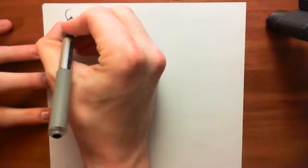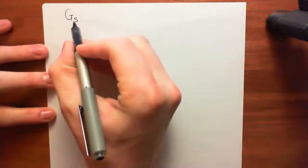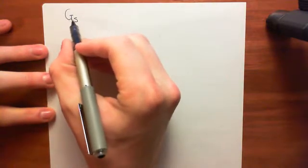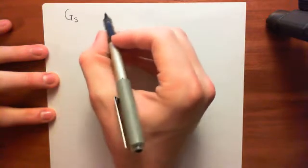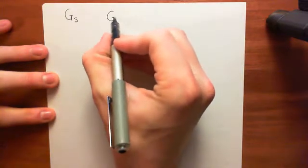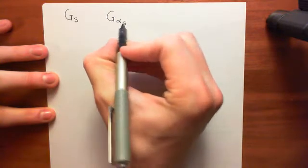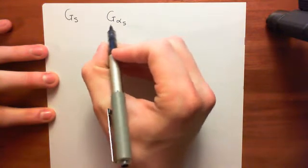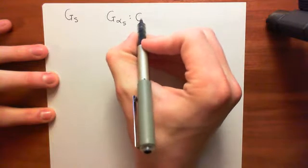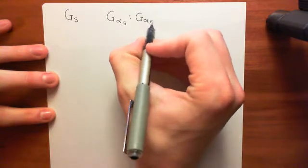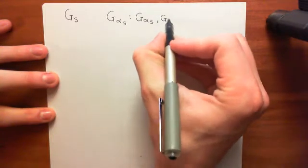We're going to be interested in heterotrimeric G-proteins which are called Gs heterotrimeric G-proteins. What this naming means is that the alpha subunit of these heterotrimeric G-proteins is within the family of Gα-S alpha subunits, which contains two members: Gα-S and also Gα-olf.